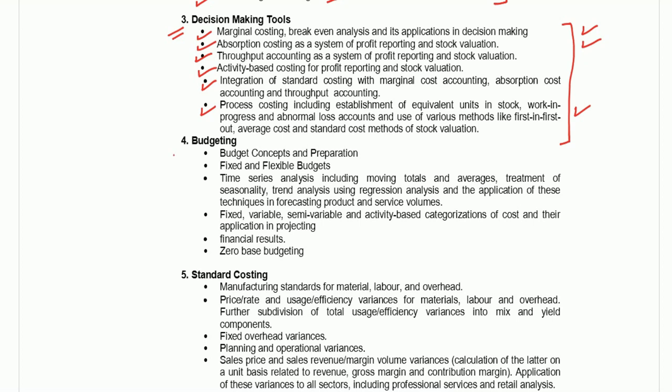The fourth topic is budgeting — basic concept of budget, fixed and flexible budget, fixed, variable, semi-variable, financial result, and zero-based budgeting. Out of all these, zero-based budgeting is the most important, and fixed and flexible budget is also important. Most questions from budgeting come from either zero-based budgeting or fixed and flexible budget, so one should have knowledge of these two.